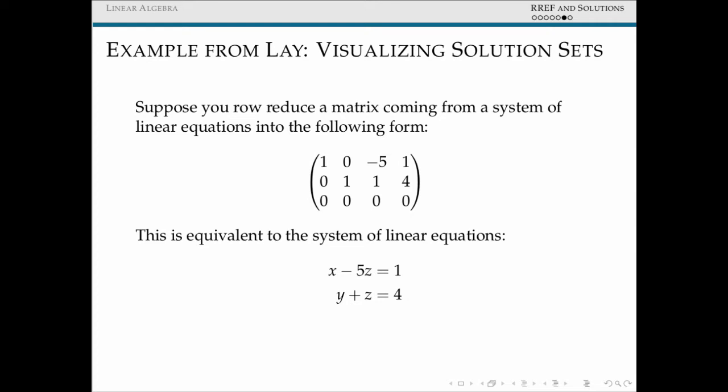So for this system, we have 1 and 2 are going to be our pivot columns. So this corresponds to, since we're going to be doing this in three variables, let's actually change these to, instead of x1, x2, and x3, let's call these x, y, and z. And z is our free variable as it contains no leading entry.